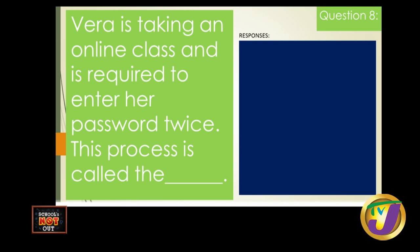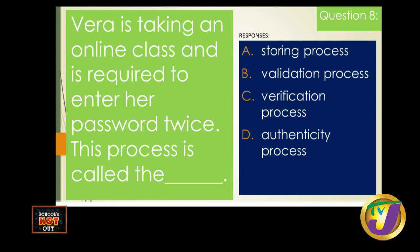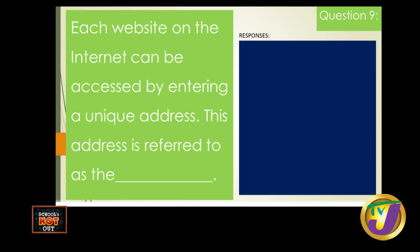Question eight: Vera is taking an online class and is required to enter her password twice. This process is called A) storing process, B) validation process, C) verification process, or D) authenticity. This situation is called a double entry and is used for verification — especially when signing up for email where you enter your password twice to ensure both entries match. The answer is C: verification process.